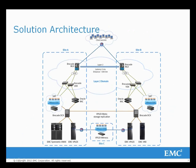This shows the solution architecture including both production sites and the third site where the VPLEX Witness was deployed. Here we see the network implementation. Brocade VDX switches were deployed at each site and MLX routers are used to extend Layer 2 networking between the data centres. The SAN was built using Brocade DCX backbones.